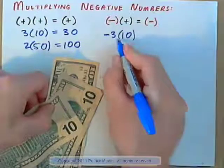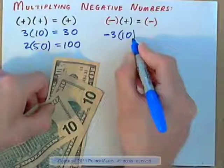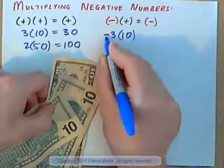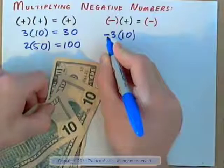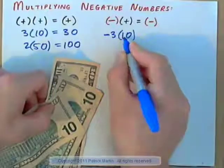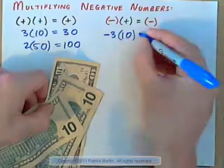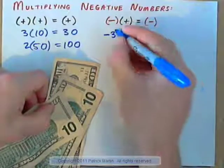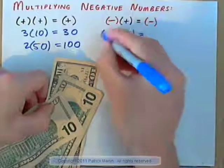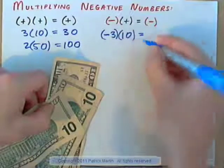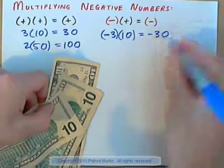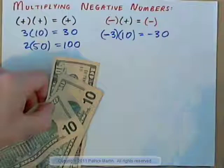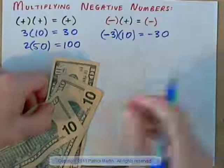It would look like negative 3 times 10. Subtraction and negative are the same thing, theoretically. So to subtract three $10 bills is just like doing negative 3 multiplied by positive 10. And the answer is negative 30 — it's the same thing.